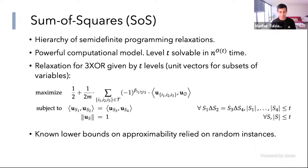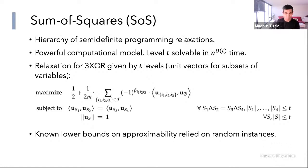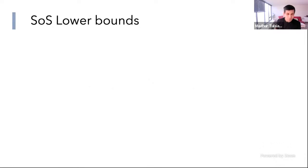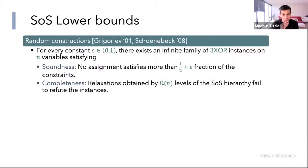Many known lower bounds for this family of algorithms rely on random instances in one way or another — either you have a random instance or you start from a random instance and do some reduction on top of it. Our goal is to construct explicit instances. The result I want to compare against is: for a random 3XOR formula, choosing the left-hand sides and right-hand sides both at random with a sufficient number of constraints, the instance is not satisfiable — in fact, no assignment satisfies more than 51% of the constraints.